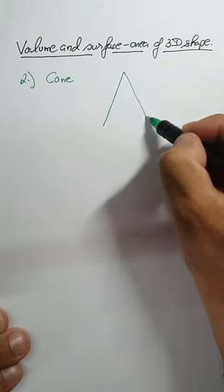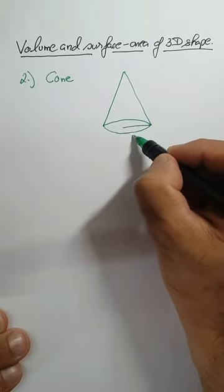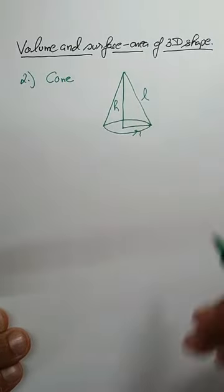Now a cone looks like this which is actually a circle at the base. This is the radius r, this is the height h, and L is the slant height.